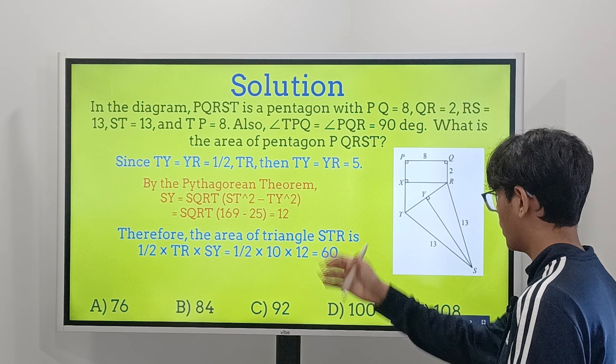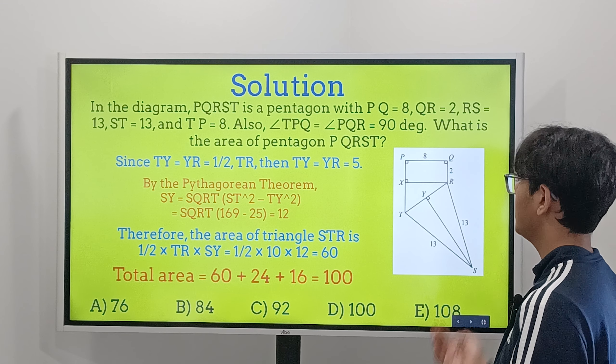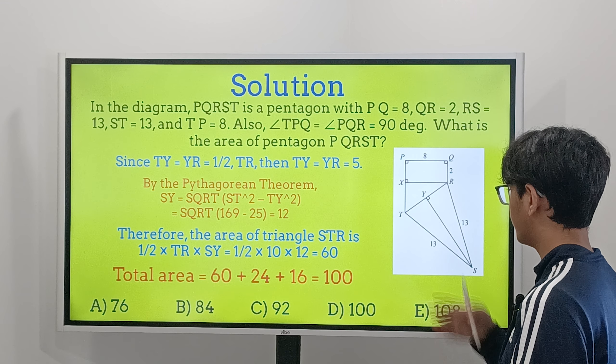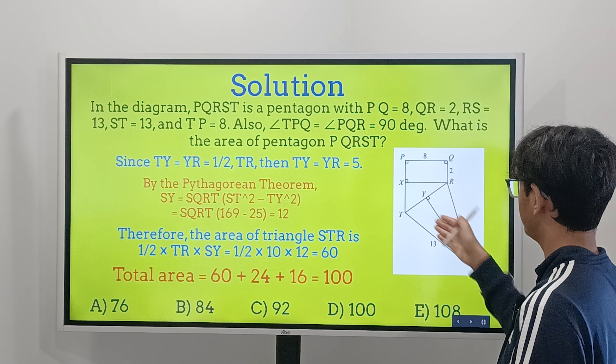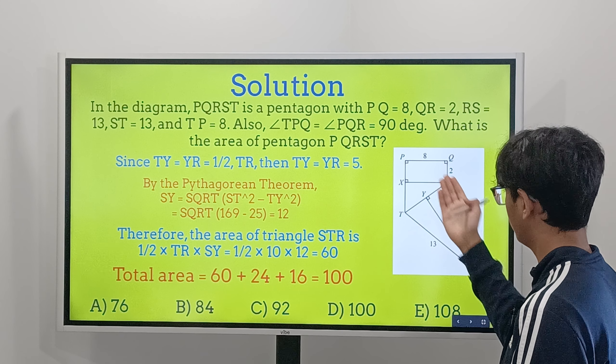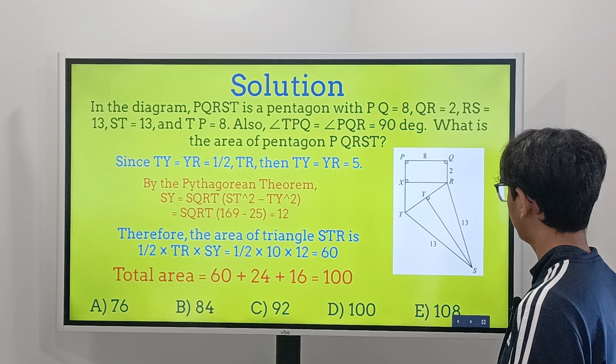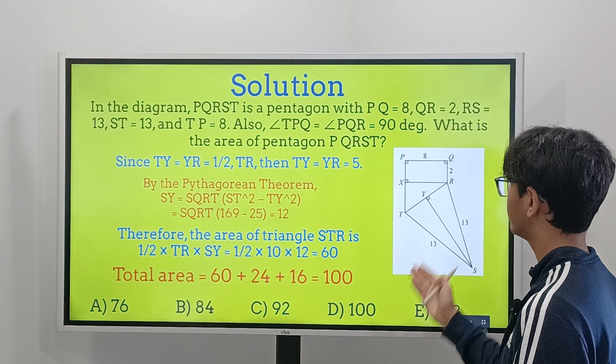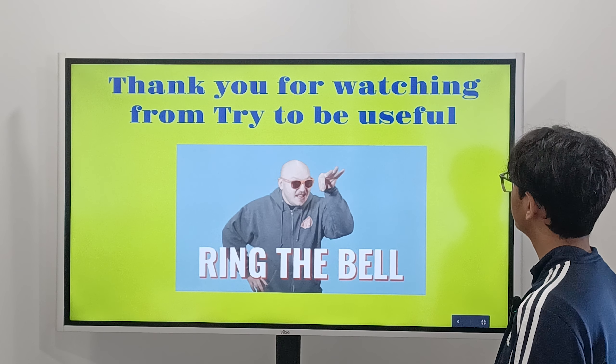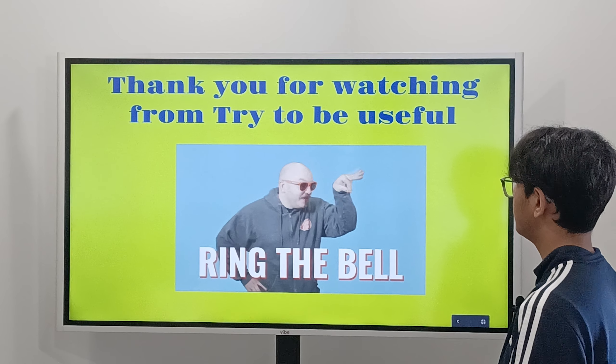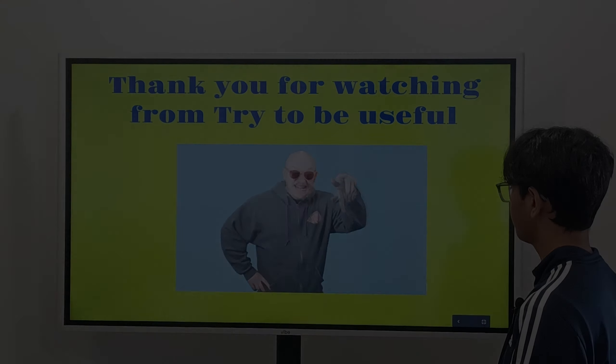Now we use the Pythagorean theorem to find the height YS. Looking at half the triangle, we know TY equals 5 and the hypotenuse ST equals 13. So SY equals the square root of ST squared minus TY squared, which is the square root of 169 minus 25, giving us SY equals 12.